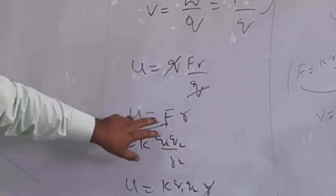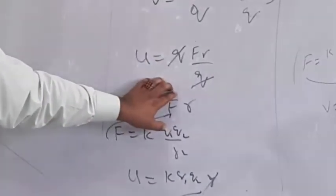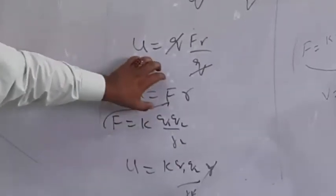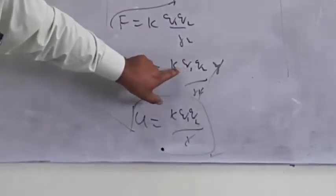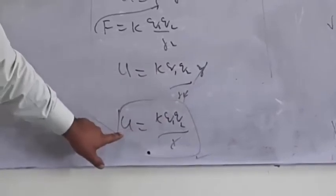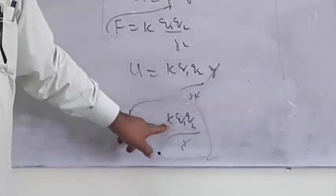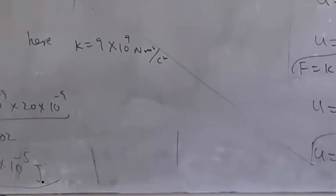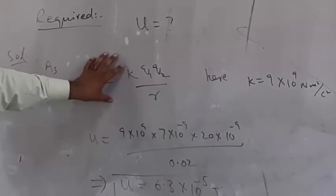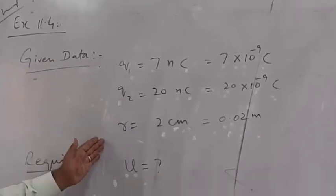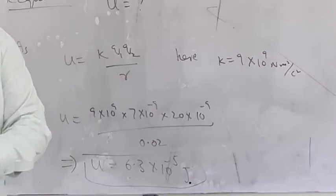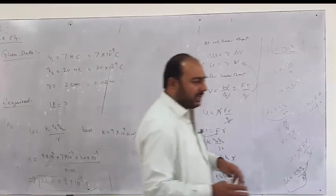Using the formula with the given charges, the potential energy equals K Q1 Q2 divided by R. This gives us 6.3 × 10^-5.